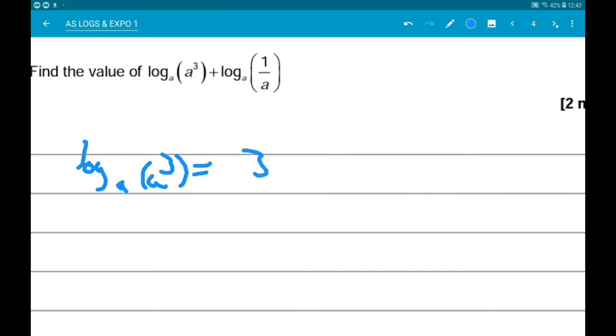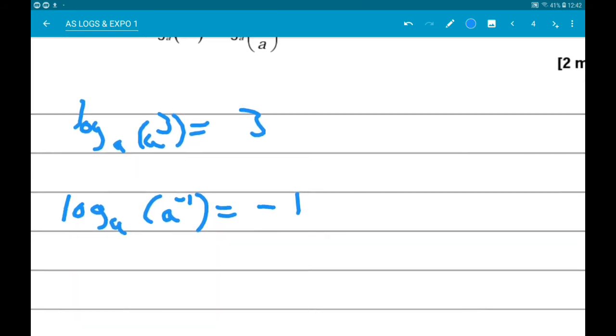And then log base a of 1 over a we can think of as a to the minus 1. So that's asking what power do we have to set a to, to get a to the minus 1. So it's minus 1. So then we want 3 add minus 1, which is 2.